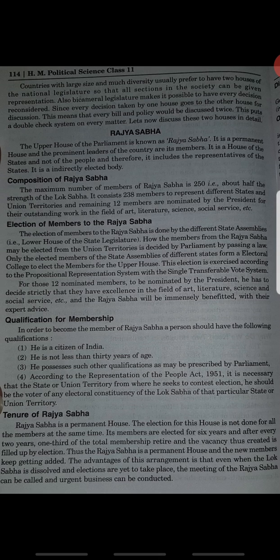Tenure of Rajya Sabha: Rajya Sabha is a permanent house with no fixed dissolution after five or six years. Members are elected for six years. After every two years, one-third of the total membership retires and the vacancies created are filled by fresh elections. Thus new members keep getting added and Rajya Sabha remains a permanent house.